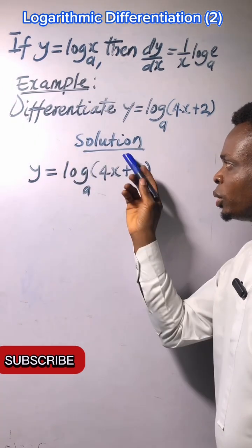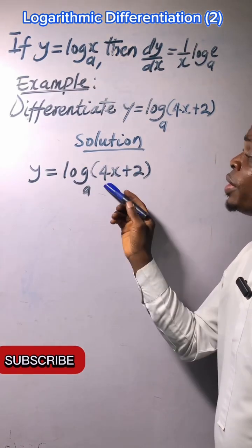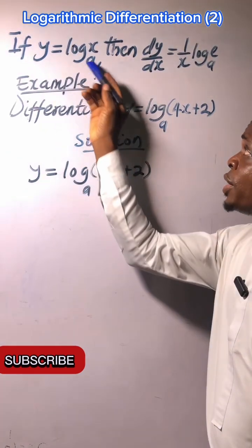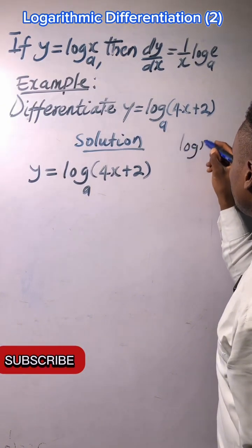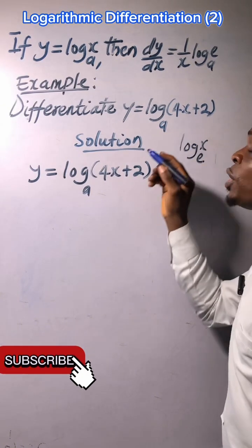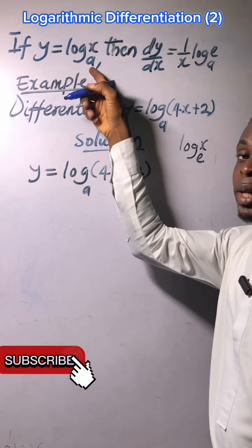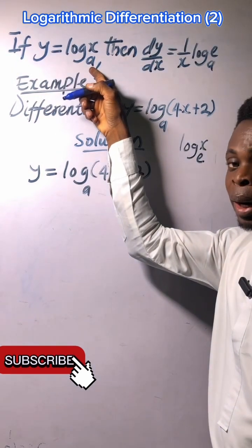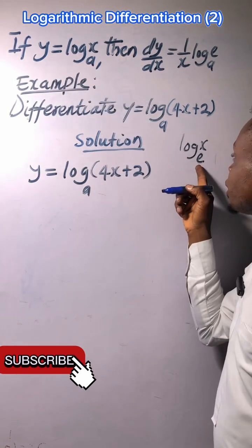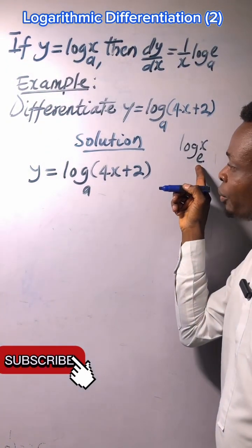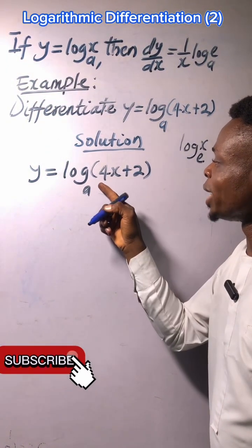Solution: We have been given this to differentiate. This logarithm is different from log x in base e. The difference between them is that this is in base a - it could be any number, it could be two, it could be ten - while this is a natural logarithm in base e. So we are going to let u be this expression.